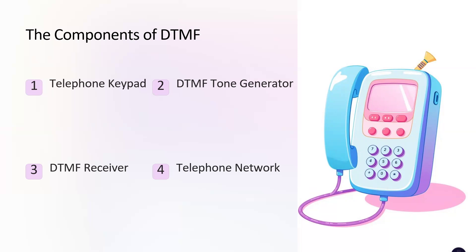The telephone keypad with 12 buttons — digits 0 to 9 plus star and pound — is the primary input mechanism for DTMF signaling. The DTMF tone generator is a circuit within the phone that converts pressed keys into the corresponding dual tone signals for transmission. The DTMF receiver on the receiving end detects and decodes the DTMF tones, allowing the phone system to interpret user input. The telephone network, including landlines and mobile networks, is responsible for transmitting DTMF signals between the caller and the recipient.